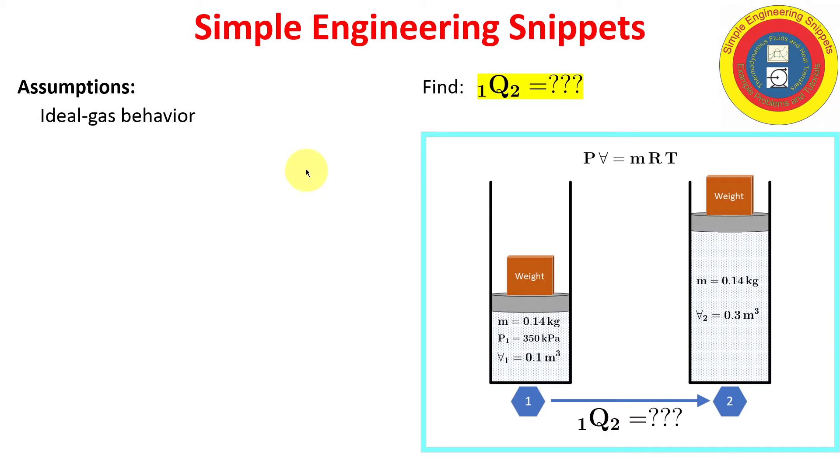Assumptions: We'll be assuming ideal gas behavior for our working fluid, the air. And we're also going to say there's no system kinetic energy changes and negligible changes in potential energy. Let's dive into the equations.